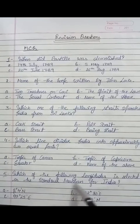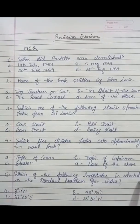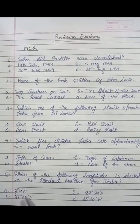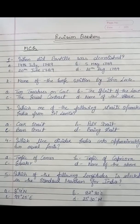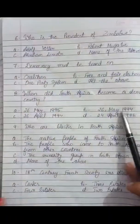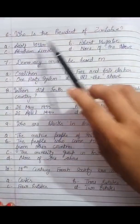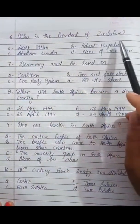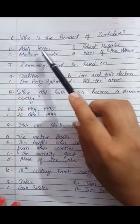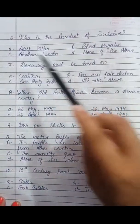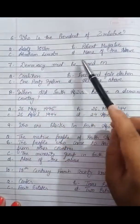Fifth: which of the following longitudes is selected as the standard meridian for India? Options are: a. 8 degree 4 minute north, b. 82 degree 30 minute east, c. 97 degree 27 minute east, d. 23 degree 30 minute north. Sixth: who is the President of Zimbabwe? Options are: a. Adolf Hitler, b. Robert Mugabe, c. Abraham Lincoln, d. None of the above.